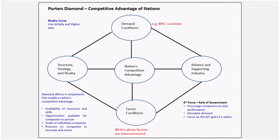The third element of Porter's Diamond is the related and supporting industries. This looks at the maturity of the overall supply chain. For example, in India we have huge demand and resources available, but whether the related and supporting industries are in a mature phase depends on which industry we pick. The maturity of the related and supporting industry is a critical component for an organization when choosing a country.